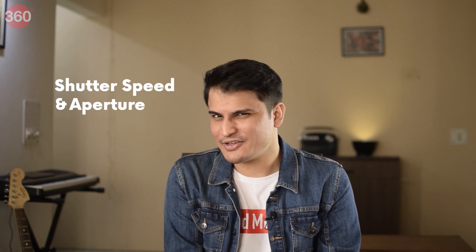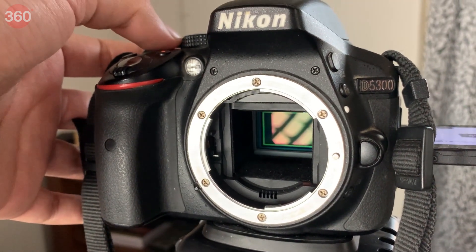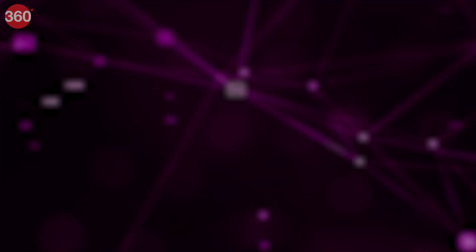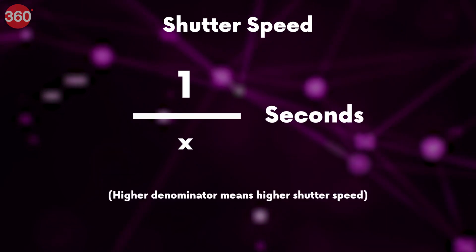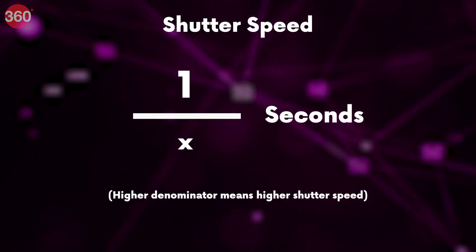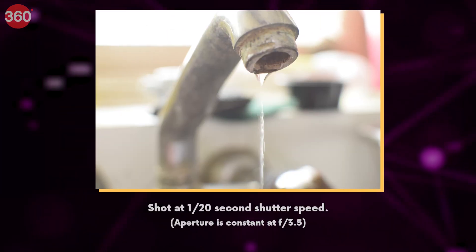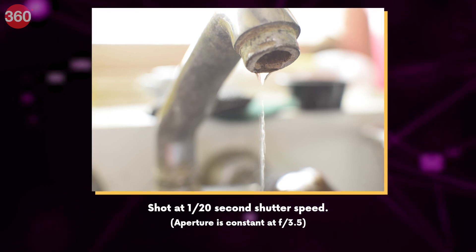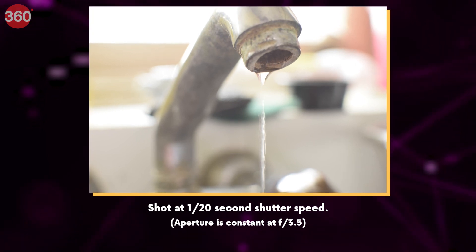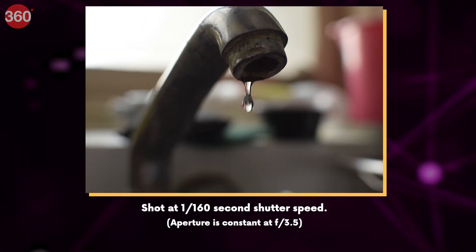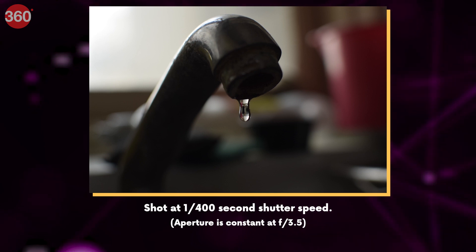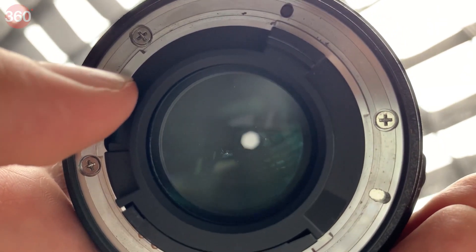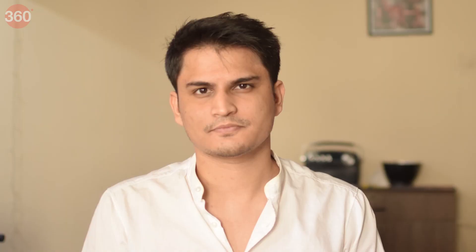Moving to cameras — terms like shutter speed, aperture, and f-stops can be confusing. Shutter speed is how fast your camera's shutter opens and closes, denoted as a fraction of a second; the higher the denominator, the quicker the shutter. A slower shutter speed means more brightness but also more motion blur, while a higher shutter speed produces crisper images at the cost of brightness.